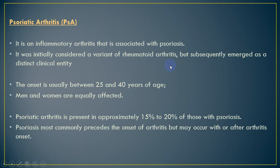Next in this group of disorders is psoriatic arthritis. As its name implies, it is associated with psoriasis, a dermatological condition. It is an inflammatory arthritis that was initially considered a variant of rheumatoid arthritis because the disease features are very similar, but it subsequently emerged as a distinct clinical entity. The onset is usually between 25 and 40 years of age, and men and women are equally affected. Psoriatic arthritis is present in approximately 15 to 20% of patients with psoriasis, so not all patients with psoriasis will have arthritis.